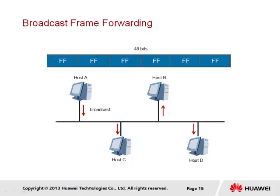The second method of frame forwarding is broadcast, and involves the transmission of a frame with all 48 bits of the destination address set to 1, which in hexadecimal is represented as a string of F values. This effectively means that all hosts on the network segment are intended recipients and are expected to process the frame accordingly. The example demonstrates a broadcast transmission at the data link layer by host A, followed by hosts B, C, and D on the same segment processing the transmitted frame once it is received.